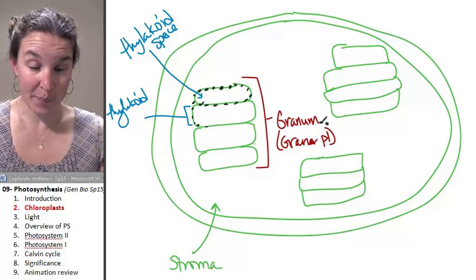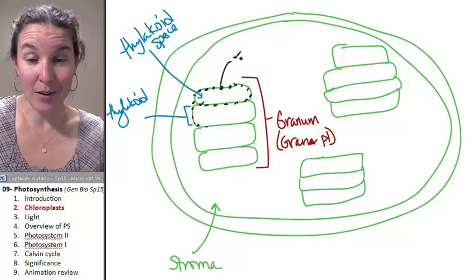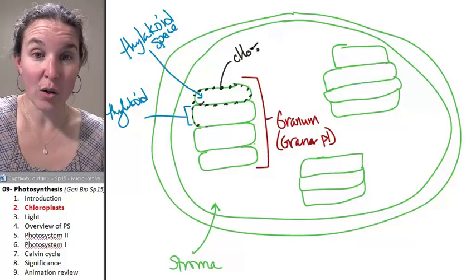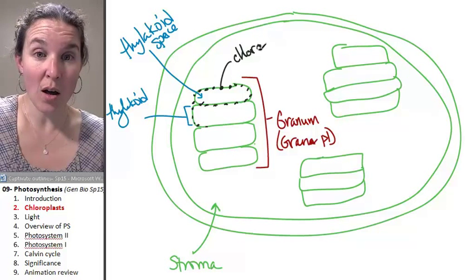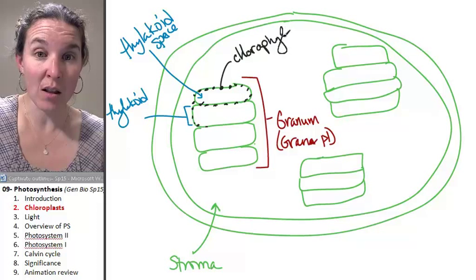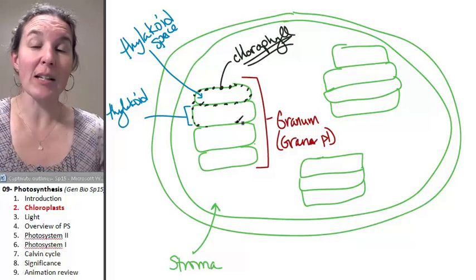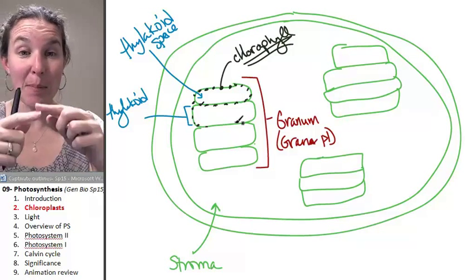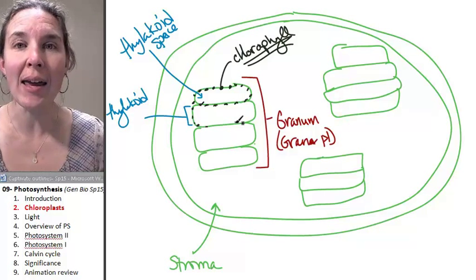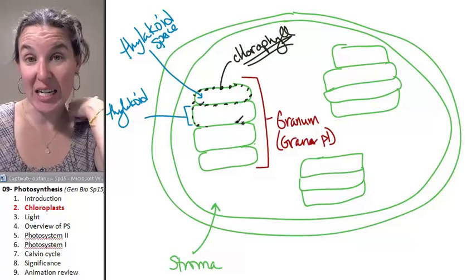I'm going to tell you what they're called. It's chlorophyll. Chlorophyll is a pigment that's embedded in all. And it's why my chloroplasts look green.